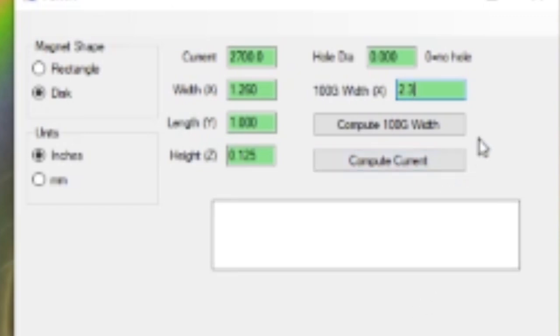There's no hole and the width at the 100 gauss length was 2.3 inches. So with this tool we can say compute the current of the magnet so that we have the magnet listed in our table of 2,700. Based on the 100 gauss location, this computes it at 2,100 amps.